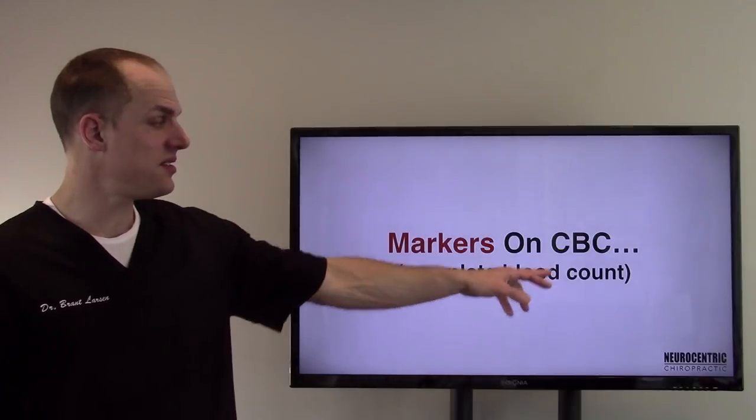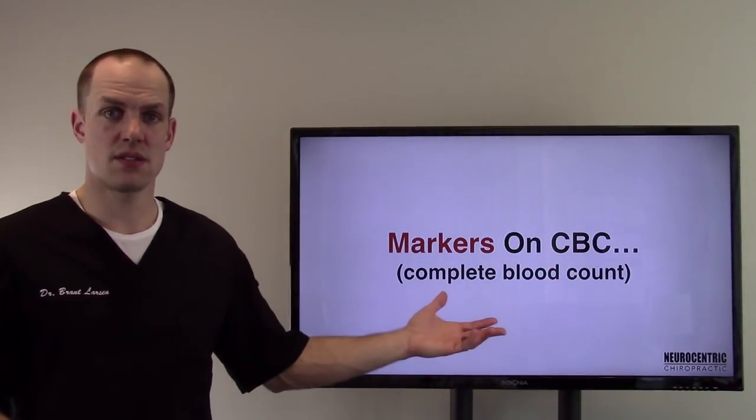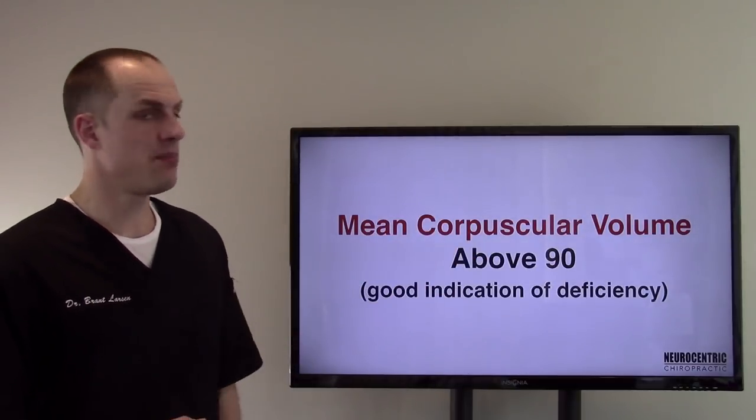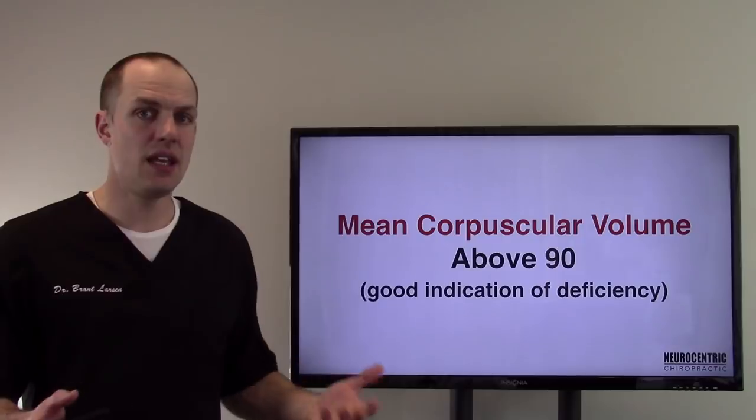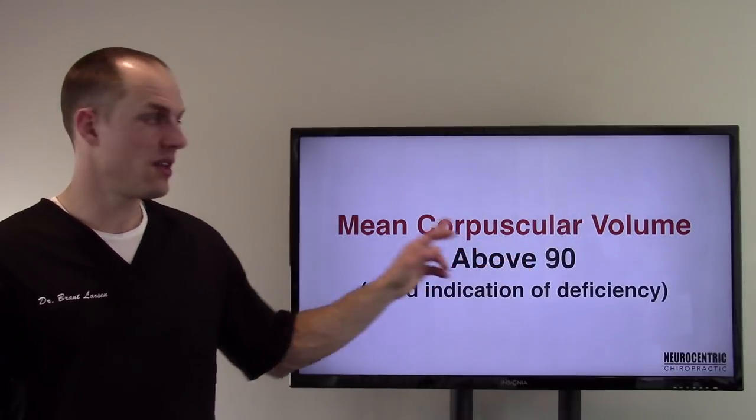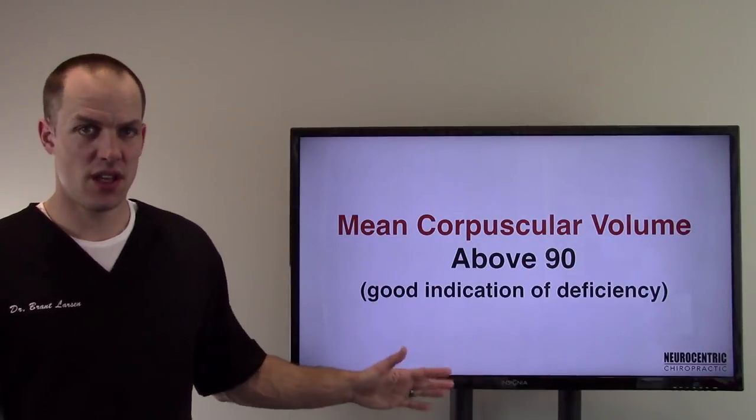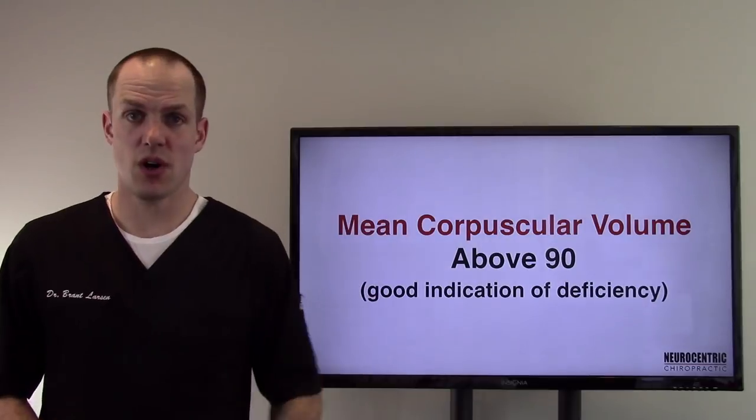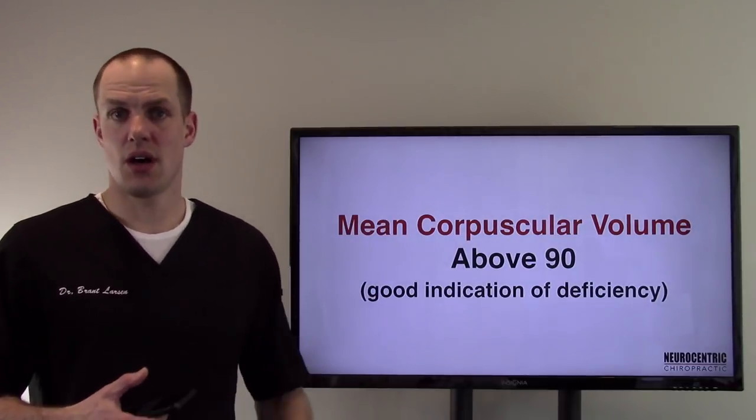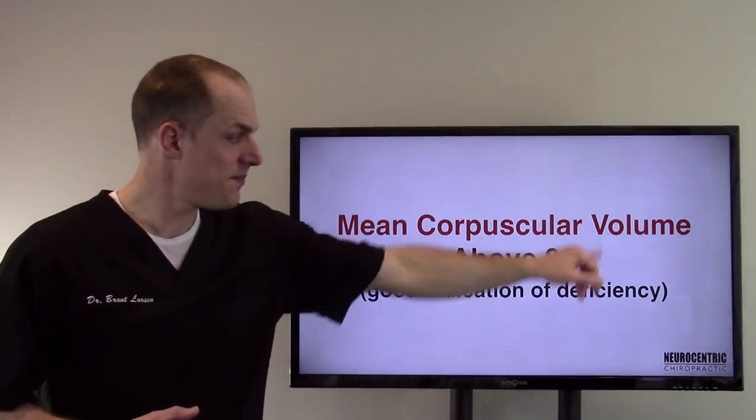Here's some markers on a CBC or a complete blood count. Most medical doctors, most hospitals run this. Mean corpuscular volume above, well let's just say 90, 91. A corpuscle is a red blood cell. The mean of it and the volume of it. It's a good indication of a deficiency. It doesn't say you have a B12 deficiency. It's an indication that it might be what's happening. Mean corpuscular volume or MCV.